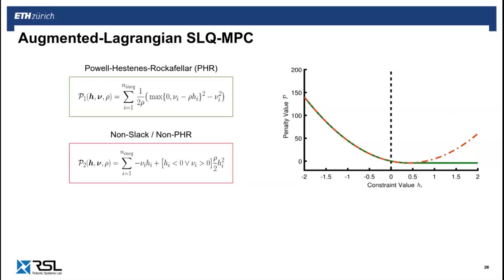A different formulation is based on the non-slack or non-PHR penalty. This method has been used previously in the context of trajectory optimization. It is clear that the PHR and non-PHR penalties match whenever the constraint is violated. However, they differ in the interior of the feasible region, where the non-slack version keeps applying a penalty whenever the multiplier is greater than 0. And this is true no matter how far the current solution is from the boundary.